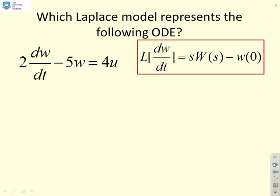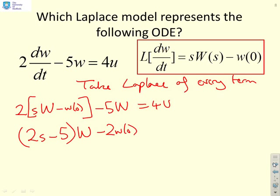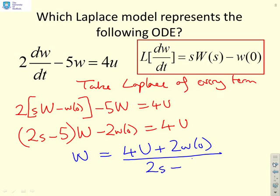Here's another example just to demonstrate the same technique. And again, what you'll notice is all I'm going to do is take Laplace of every term. So Laplace of 2dw dt, I end up with 2 into s w minus w of 0. I then get minus 5w of s equals 4u of s. If I then combine common terms, I'm going to get 2s minus 5 into w minus 2w of 0 equals 4u. And therefore w is going to be 4u of s plus 2w of 0, all divided by 2s minus 5.